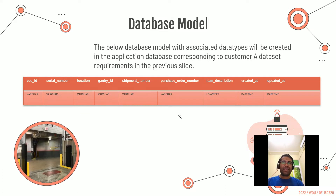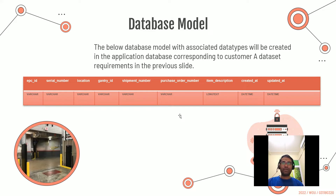I'm using snake_case for naming conventions because that works really well with Python and is best practice, instead of PascalCase which is prominent in Java, C#, and JavaScript. Most programming languages use PascalCase, but in Python we use snake_case — words separated by underscores.